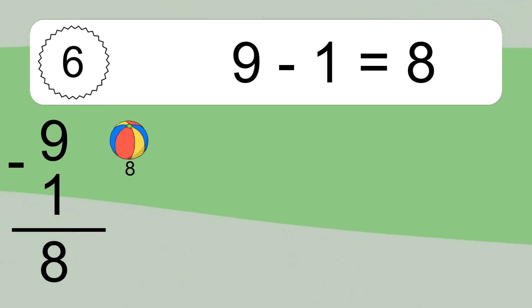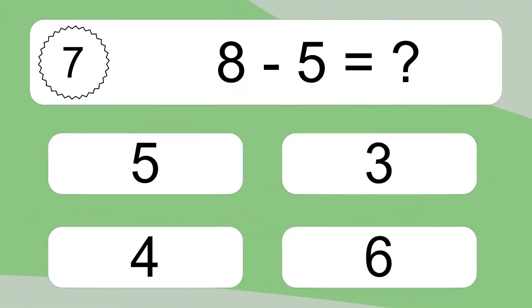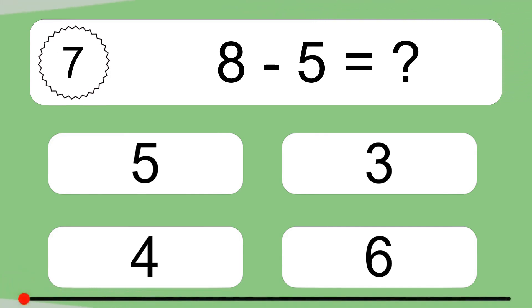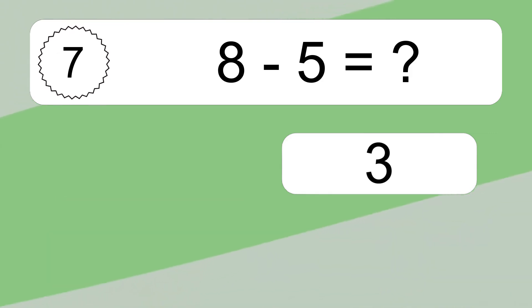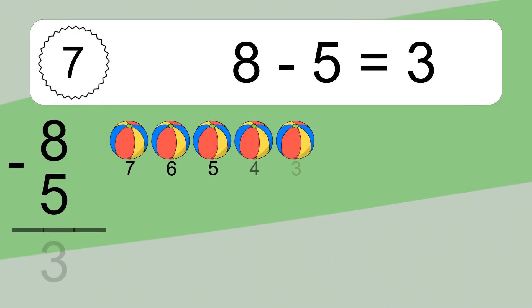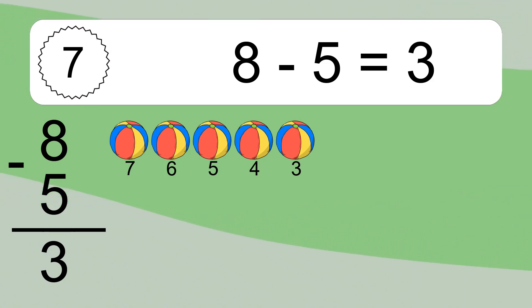8 minus 5 equals what? 8 minus 5 equals 3. Let's count it. 7, 6, 5, 4, 3.